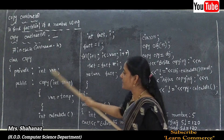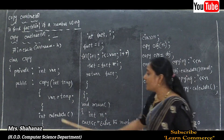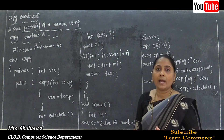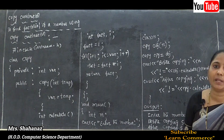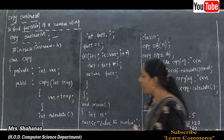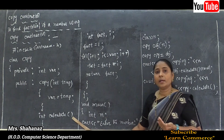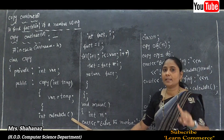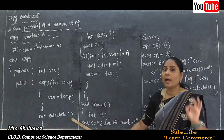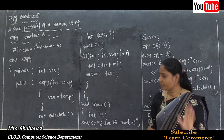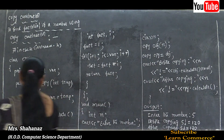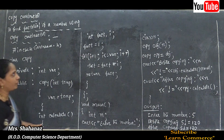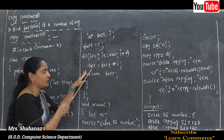After the copy constructor, we declare a second member function called 'calculate'. The return type for calculate is int. This is a normal member function — not a special member function — of the class 'copy'. Inside the calculate function, we open a flower bracket and begin some declarations needed for the calculation.